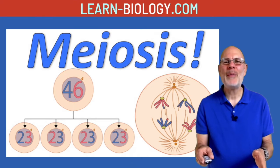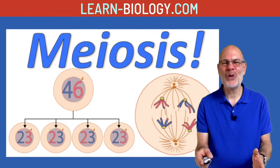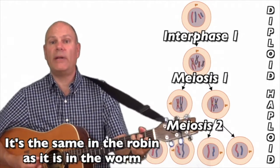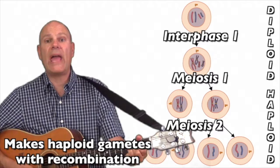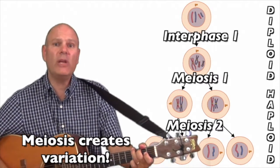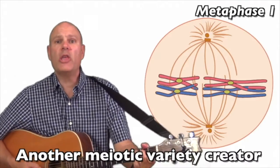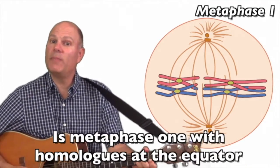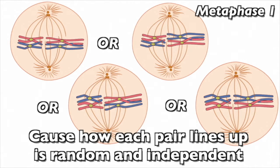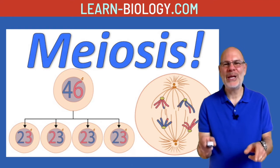I've written a song about meiosis that explains the whole thing. Here's a short excerpt: Meiosis makes eggs and sperm, it's the same in the robin as it is in the worm. Makes haploid gametes, recombination — meiosis creates variation. Another meiotic variety creator is metaphase one, with homologues at the equator, 'cause how each pair lines up is random and independent. I suggest you watch the rest of the song — the link is below. It'll teach you all the phases and everything that happens.